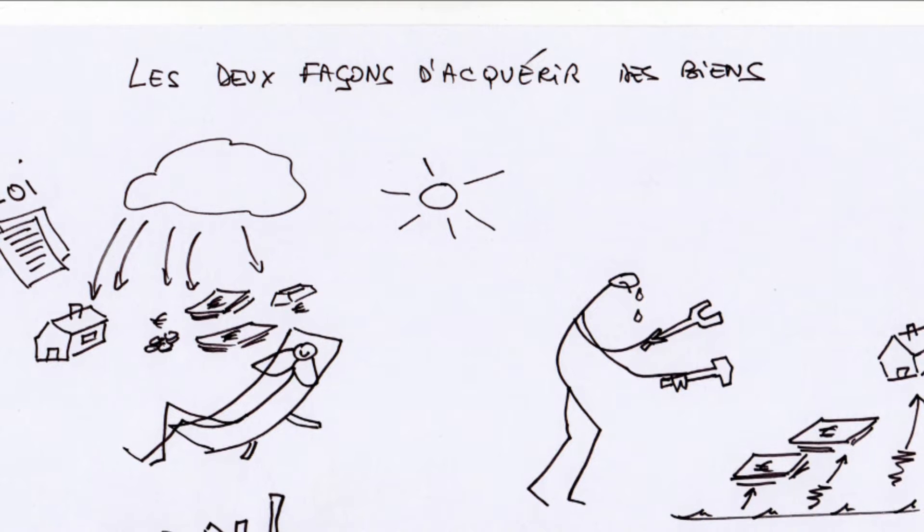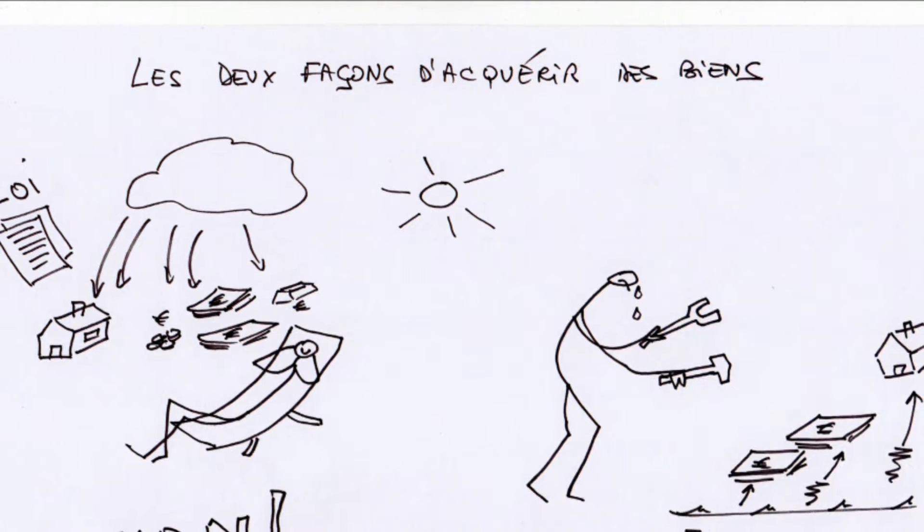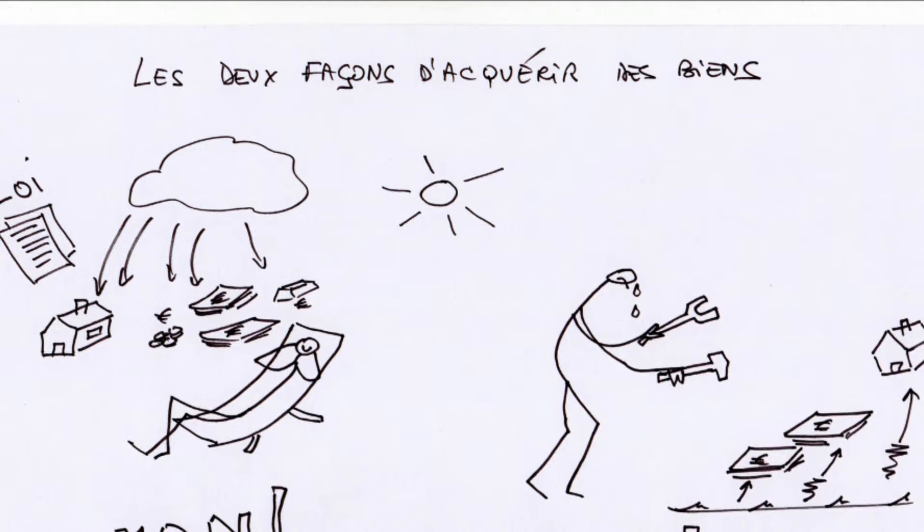La différence de richesse, donc l'inégalité entre les citoyens, vient principalement de deux sources.